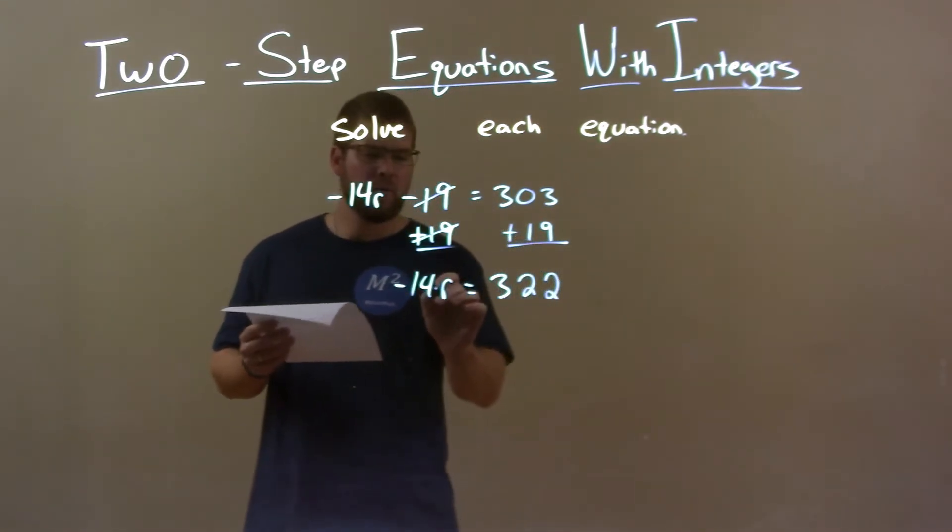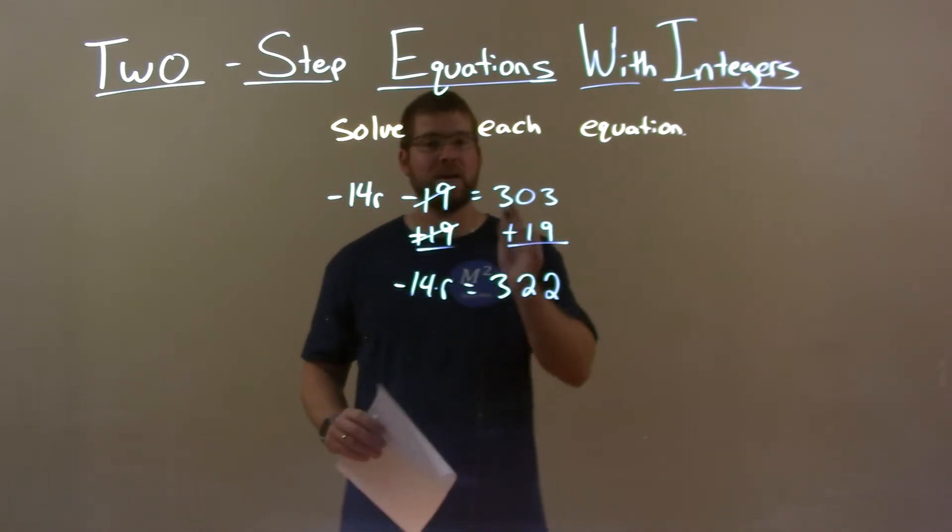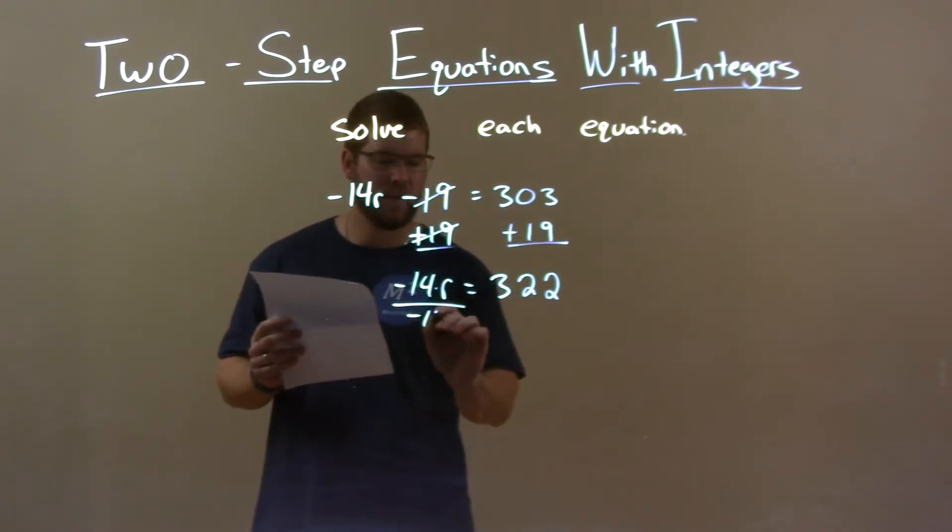So now we have multiplied negative 14 times r. Opposite multiplication, division. Divide both sides by negative 14.